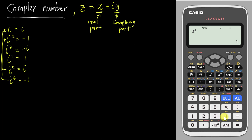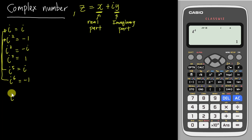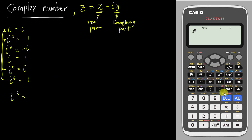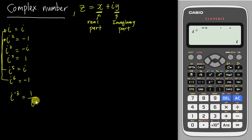If you change it to i to the power of five you get i, and i to the power of four gives one. Now, when the power is negative — for example, i to the power of negative three — the calculator will tell you it's i as well. If you work it out yourself: negative power means one over, so this is one over i to the power of three.